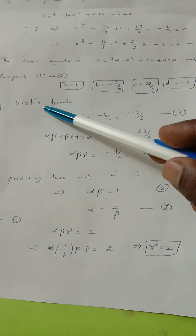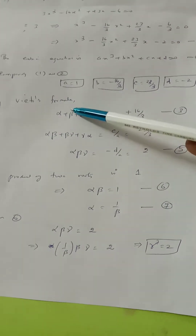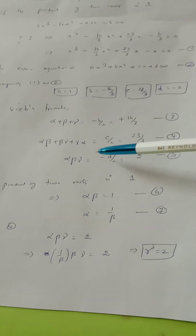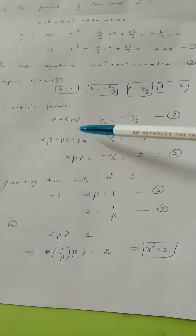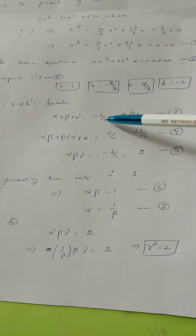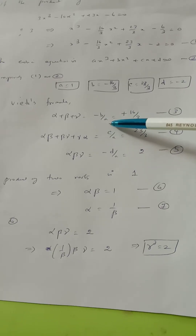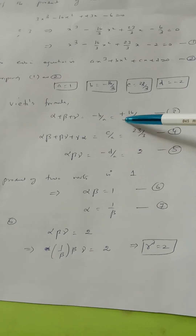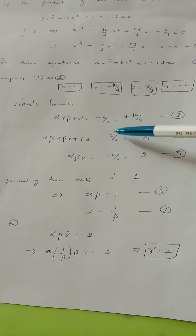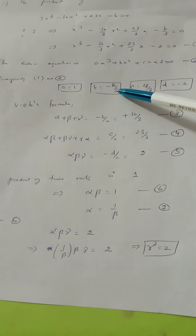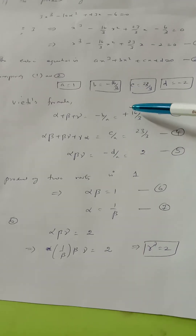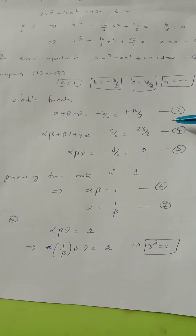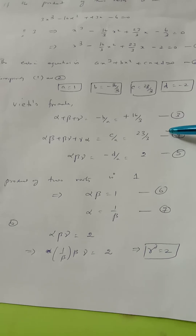We have Vieta's formulas. First: alpha plus beta plus gamma equals minus B by A. Since B equals minus 16/3, we have alpha plus beta plus gamma equals 16/3. This is equation number 3.